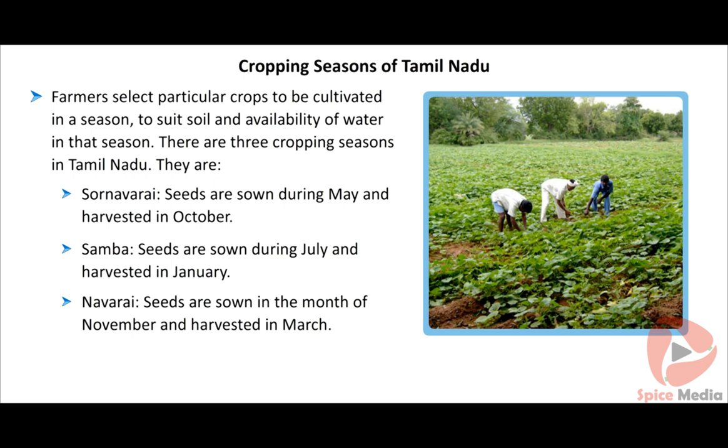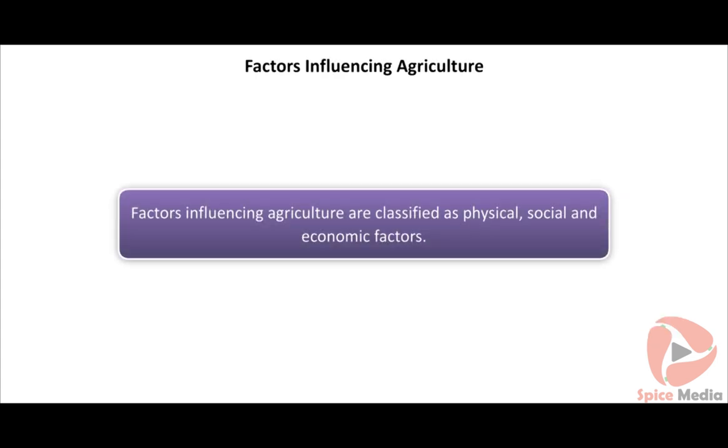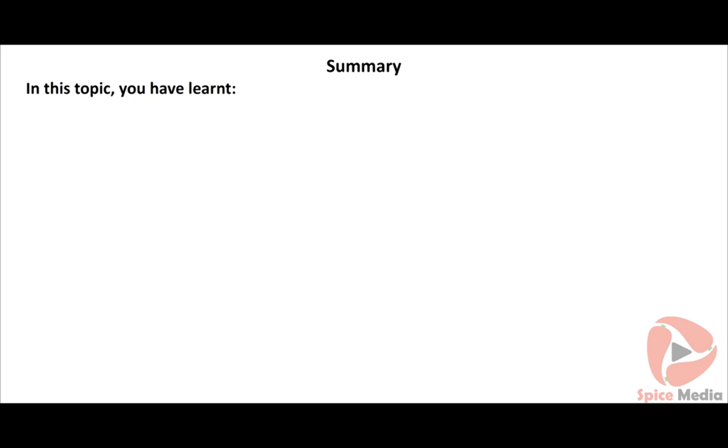Factors influencing agriculture are classified as physical, social, and economic factors.